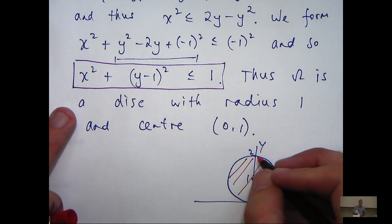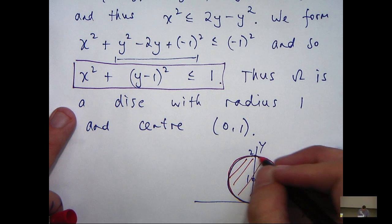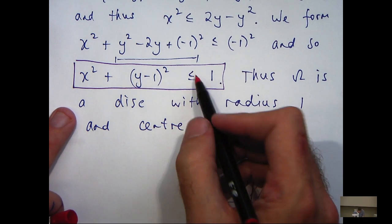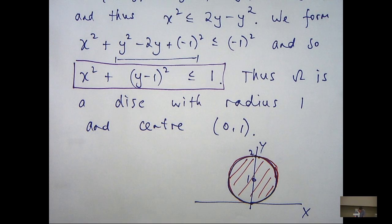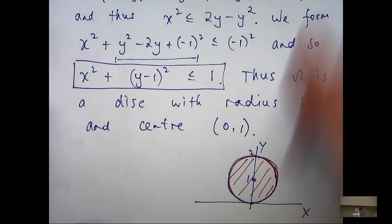In particular, note that all the points are bounded by this circle when we have equality up here. I'm going to use that to describe the region in terms of polar coordinates.